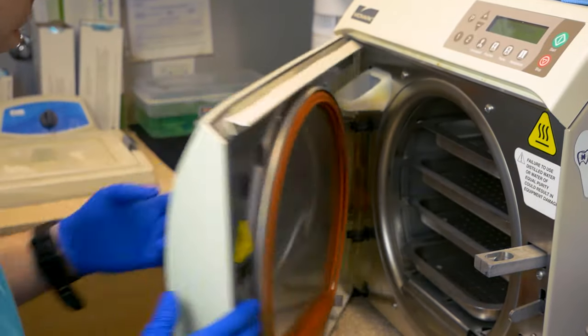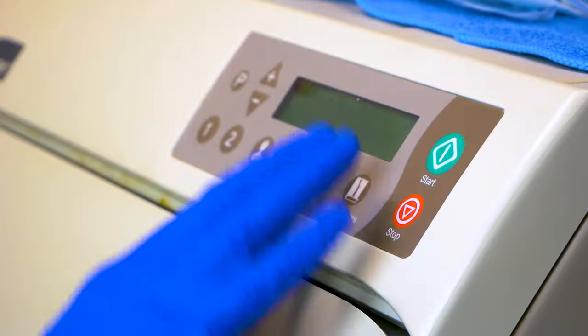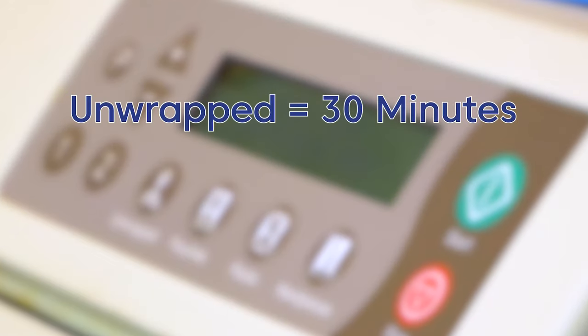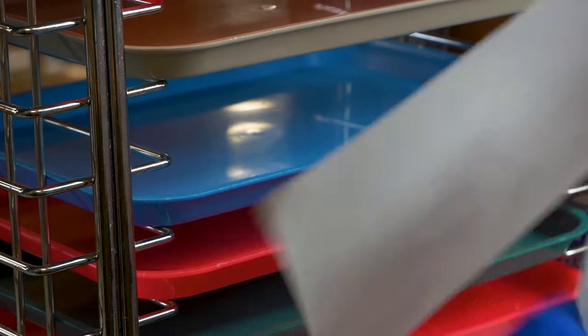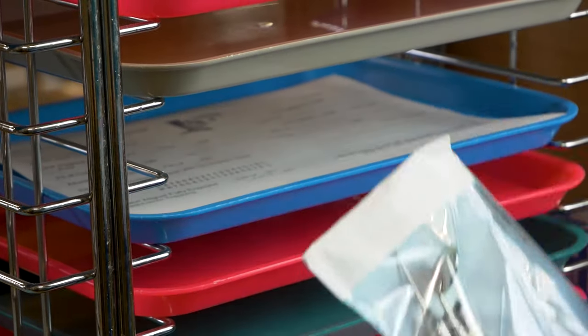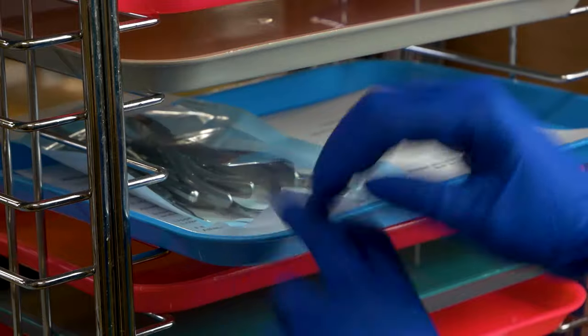If the instruments are unwrapped, meaning not in a pouch, they will sit in the autoclave for 30 minutes. Pouches will sit in the autoclave for 40 minutes. Once the instruments have been completely sterilized, the sterile tech will either organize them in a drawer or a tray. The tray will be placed on a rack for an assistant to take and use for a patient.